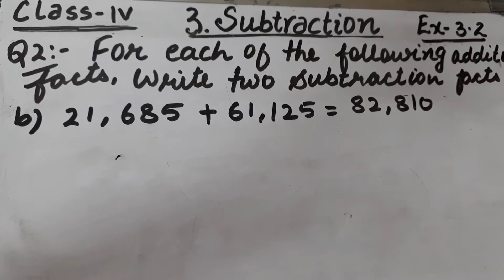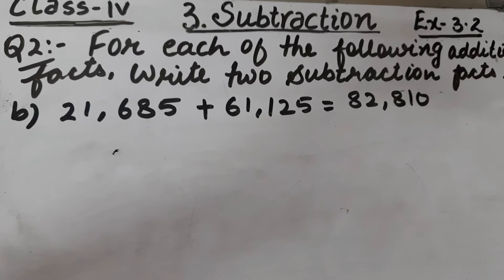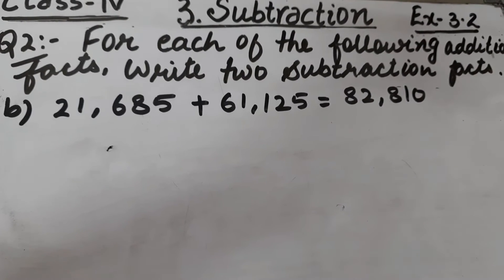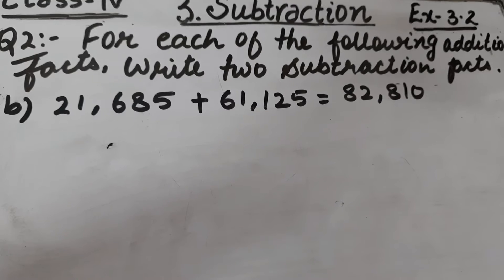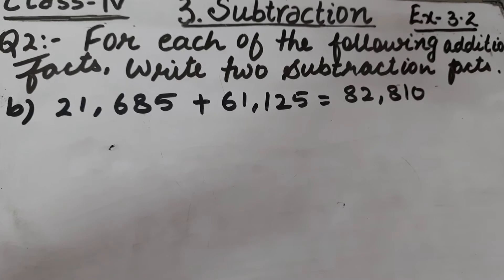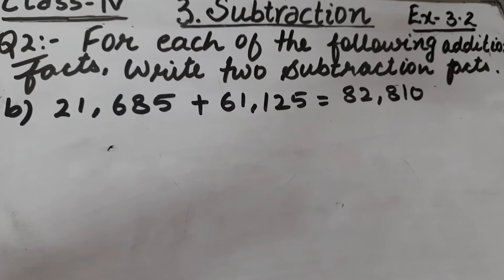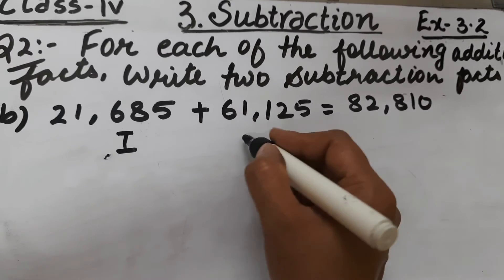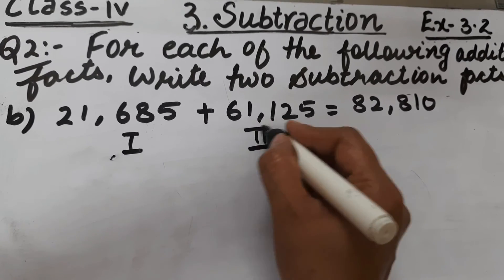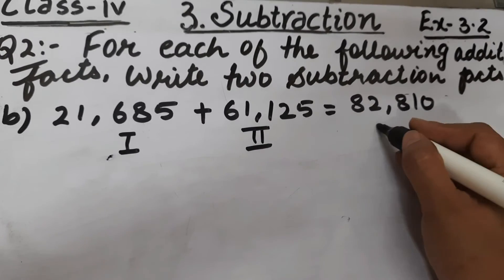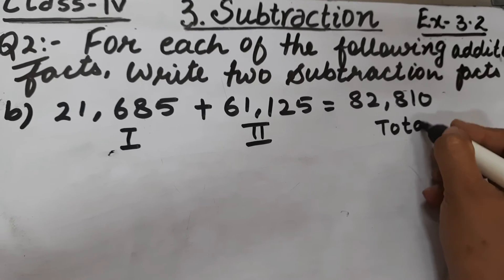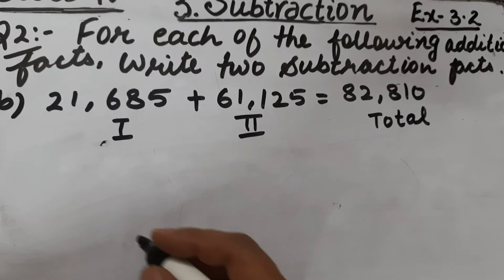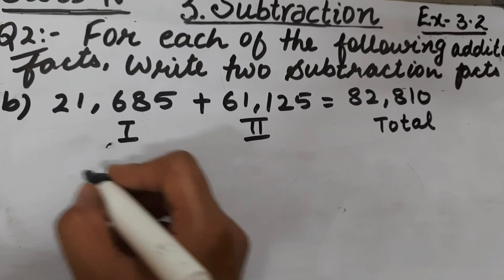Let's start Part B. Part B is 21,685 plus 61,125 is equal to 82,810. This is our first addend, this is our second addend, and this is the total. Now we have to write two subtraction facts for this.